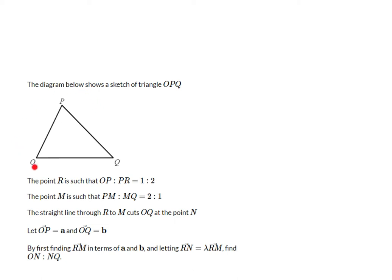So in this question, we are given a sketch of a triangle OPQ. We are given a couple of ratios to do with points and lengths that are not shown on the diagram, so we're going to have to draw those on.